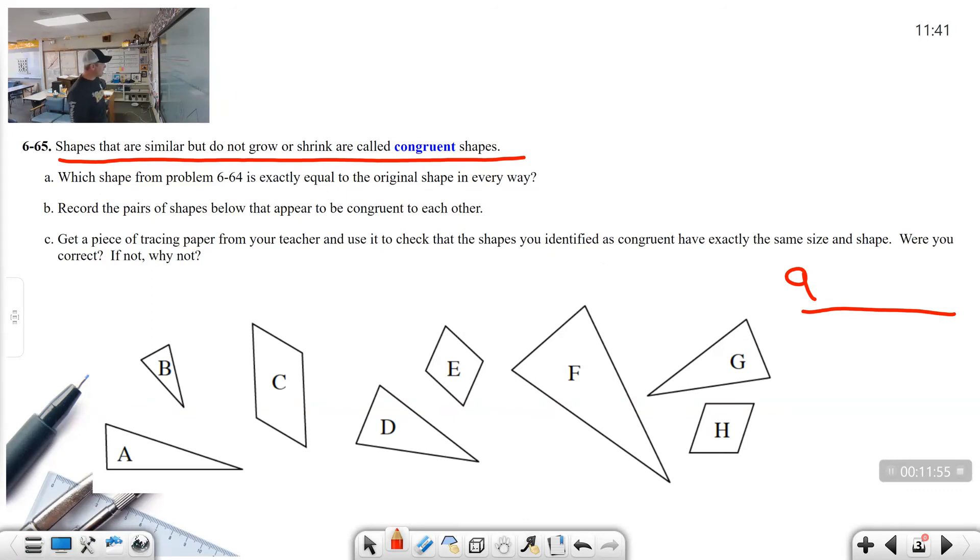Problem letter B, record the pairs of shapes below that appear to be congruent to each other. So just looking at the problems in front of you, which of these appear to be congruent? So I want you to write B. You're going to write the pairs. Some letter is congruent to which shape. I want you to look and compare. Pause the video so that you can record those pairs.